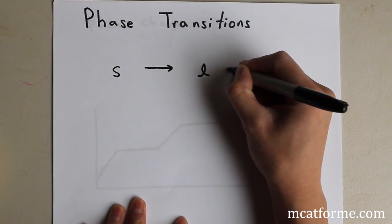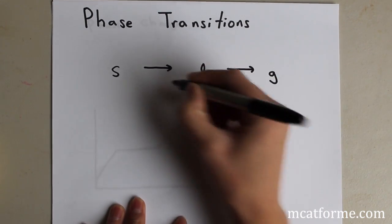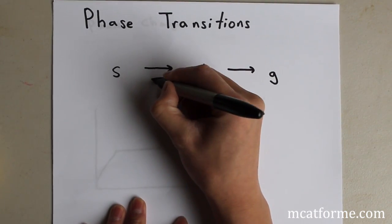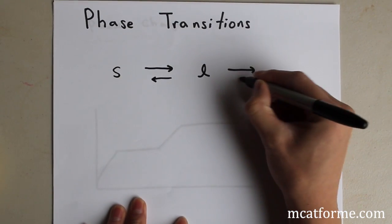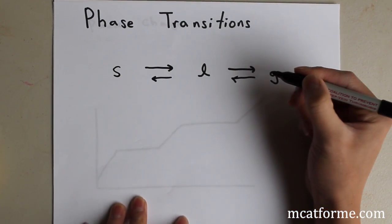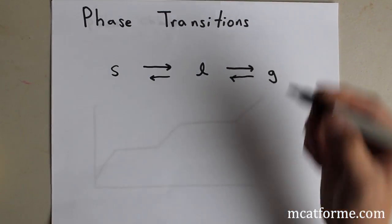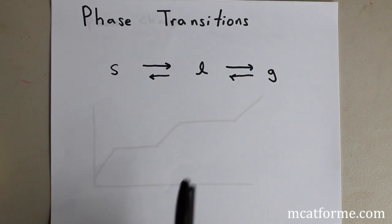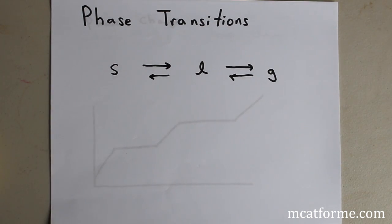So we have solid, liquid, and gas. We need to know the changes between solid to liquid, liquid to gas, and back and forth.